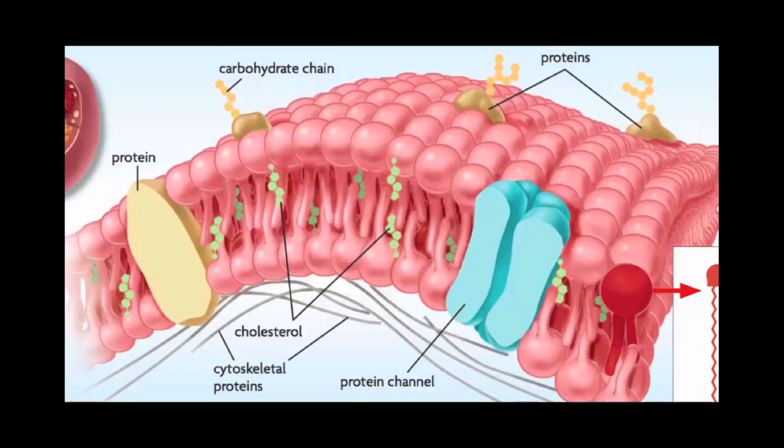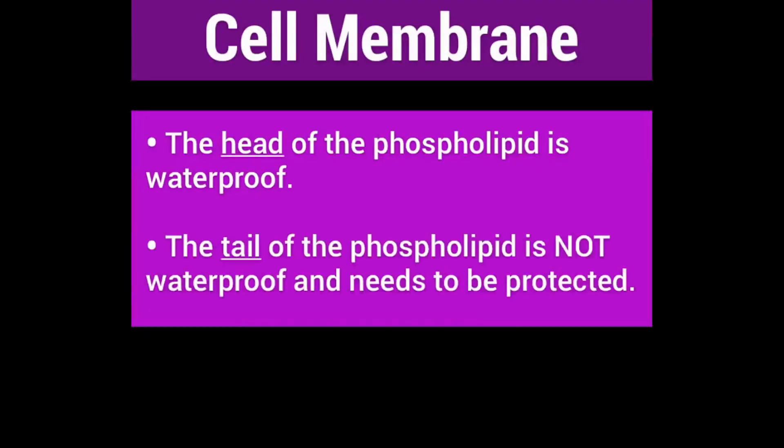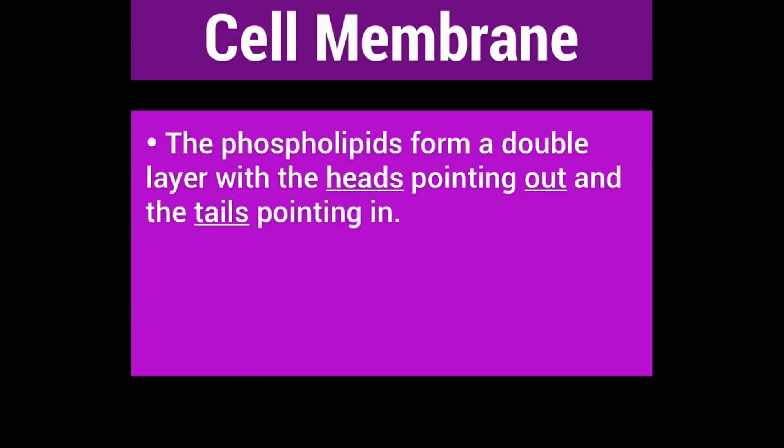Scientists think that it looks something like this. So just to review, the head of the phospholipid is hydrophilic, and the tail of the phospholipid is hydrophobic and needs to be protected, and that is why we stagger the tails on the inside. The phospholipids form a double layer with heads pointing out and tails pointing in.